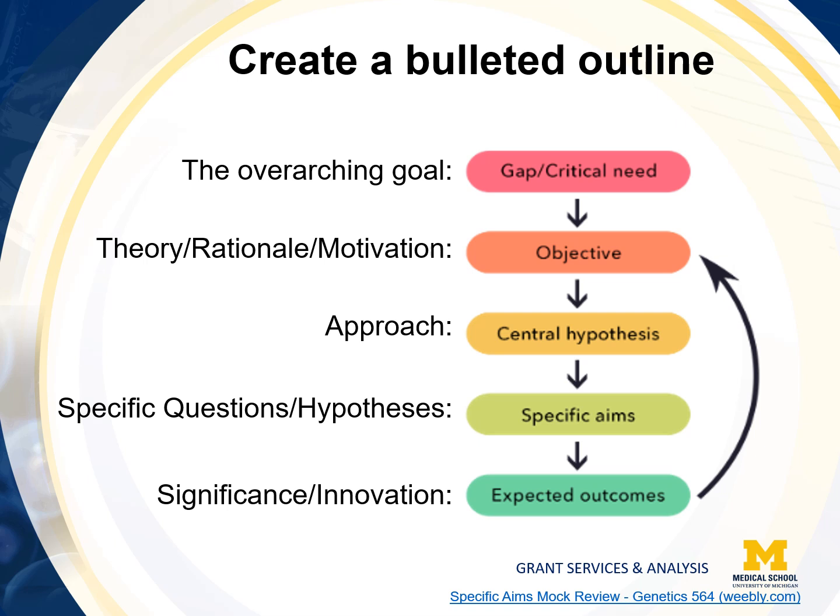Here are some of the essential elements of the aims. The overarching goal — what is the problem or issue that needs to be addressed? The theory, rationale, motivation, or essentially the why. Your approach — what is the applicant's approach or method? You may not need to go into detail; you can consider if it's behavioral, genetic, or otherwise. Your specific questions or hypotheses. Your aims — each should test a specific part or aspect of your working hypothesis. And finally, the significance and innovation: why is this important, how will this advance and impact biomedical sciences, how is this innovative, and how is this unique?